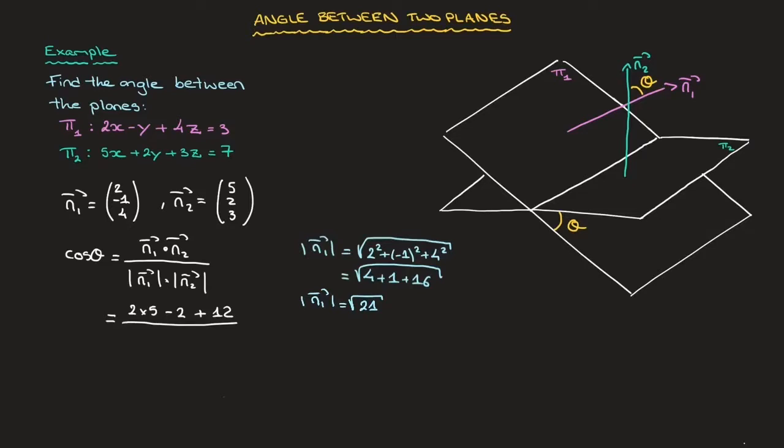So we can add that on the denominator. That's √21 times the magnitude of n₂. And again, I'll do that on the right-hand side here. The magnitude of n₂ equals the square root of 5² + 2² + 3². So that's 5² + 2² + 3².